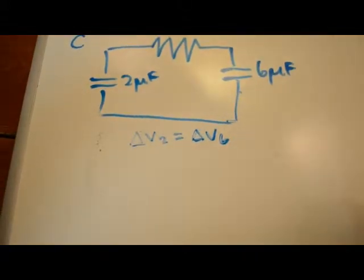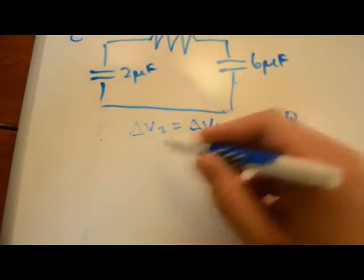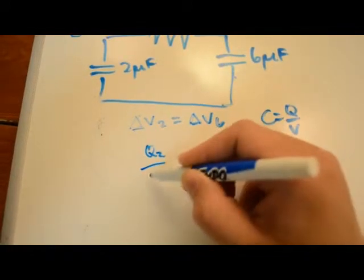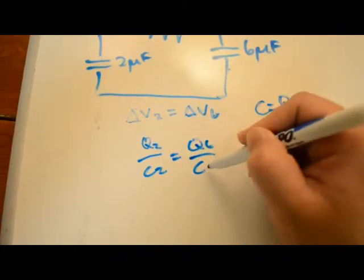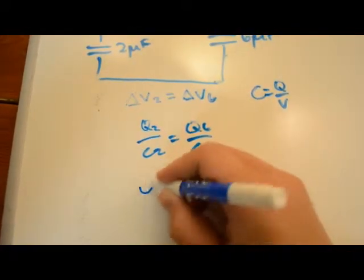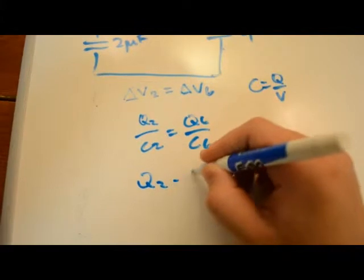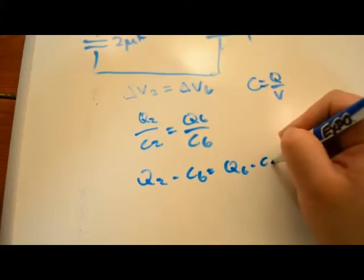Now we use the same C equals Q over V equation. We can set up a proportion: Q2 over C2 equals Q6 over C6. We cross multiply and get Q2 times C6 equals Q6 times C2.